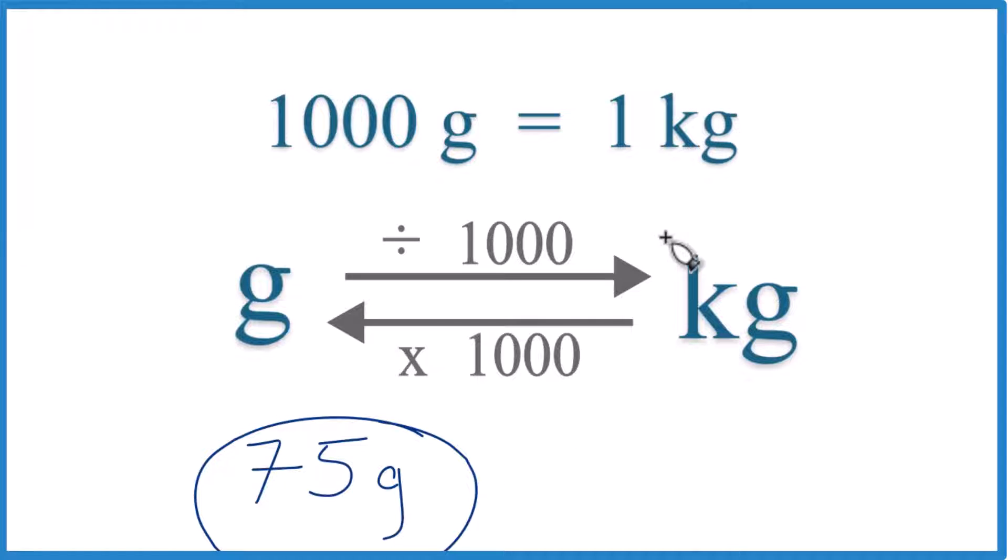So let's convert 75 grams to kilograms. Here's how you do it. So 1,000 grams equals one kilogram. This is a conversion factor. This is something you should memorize.